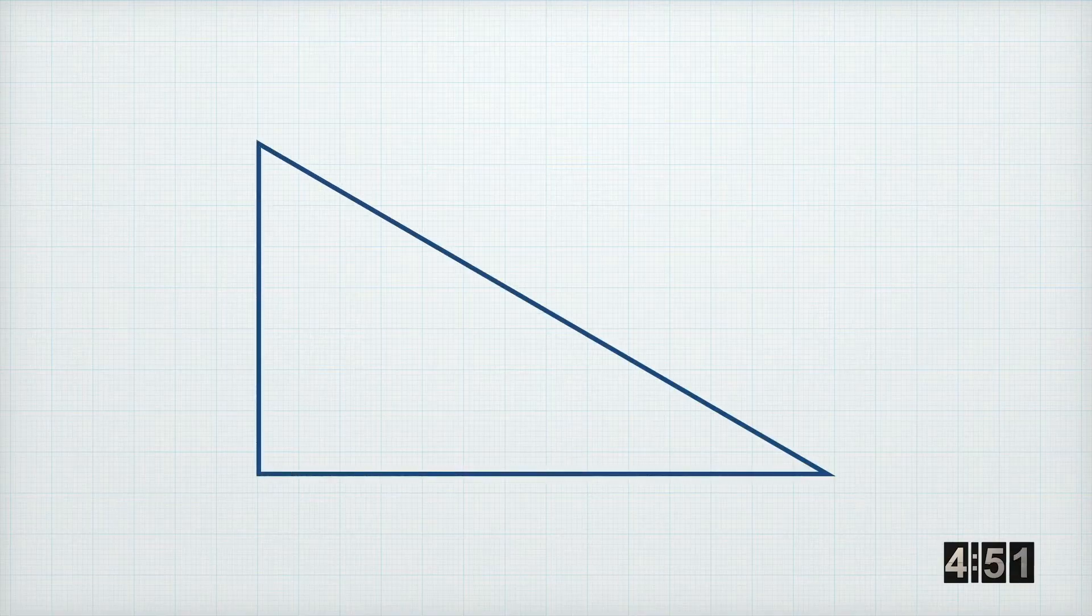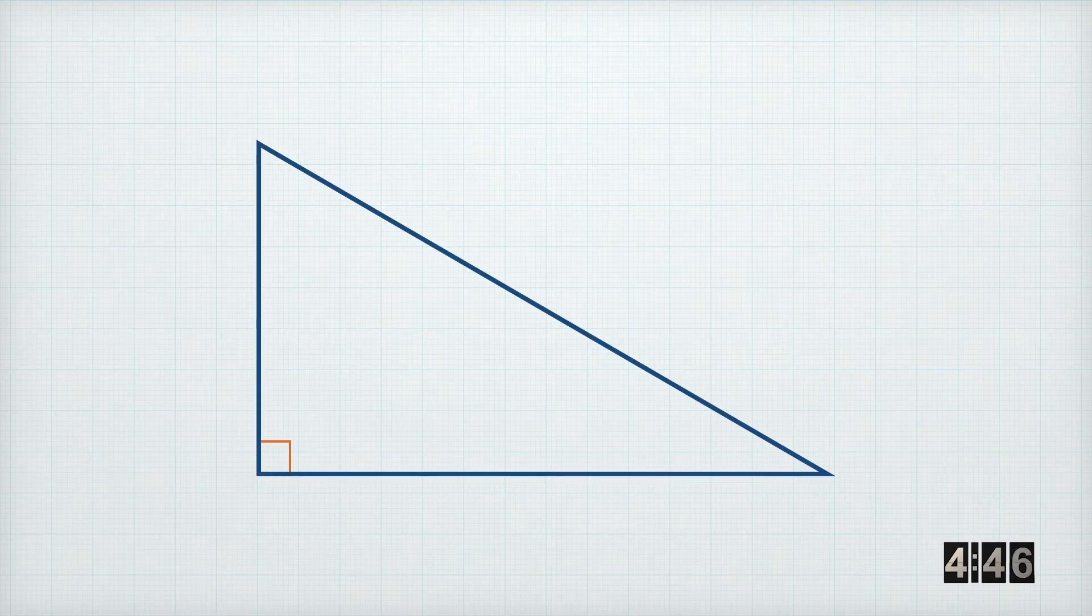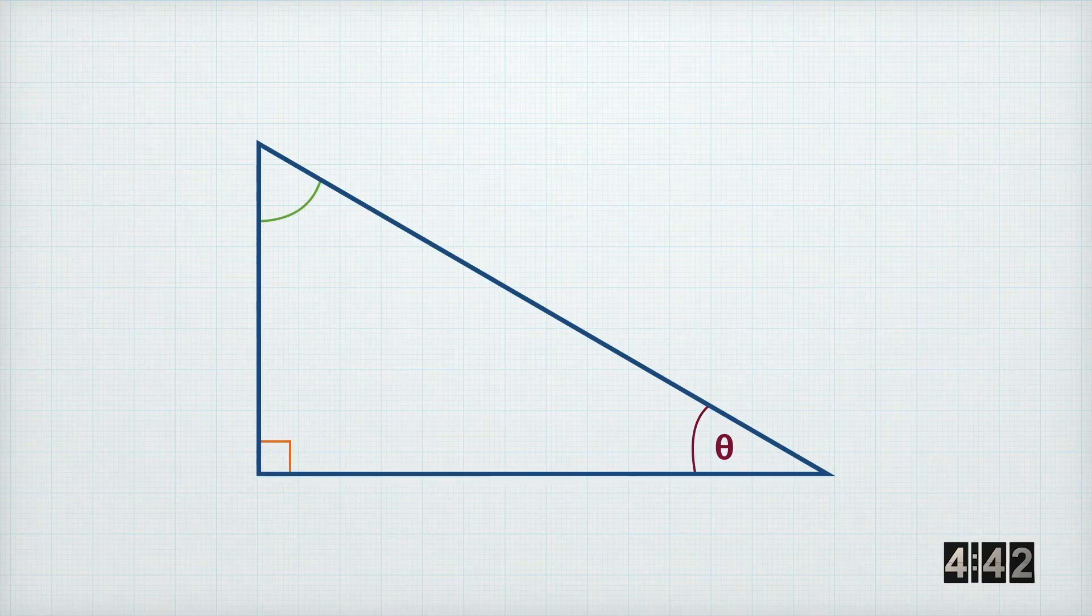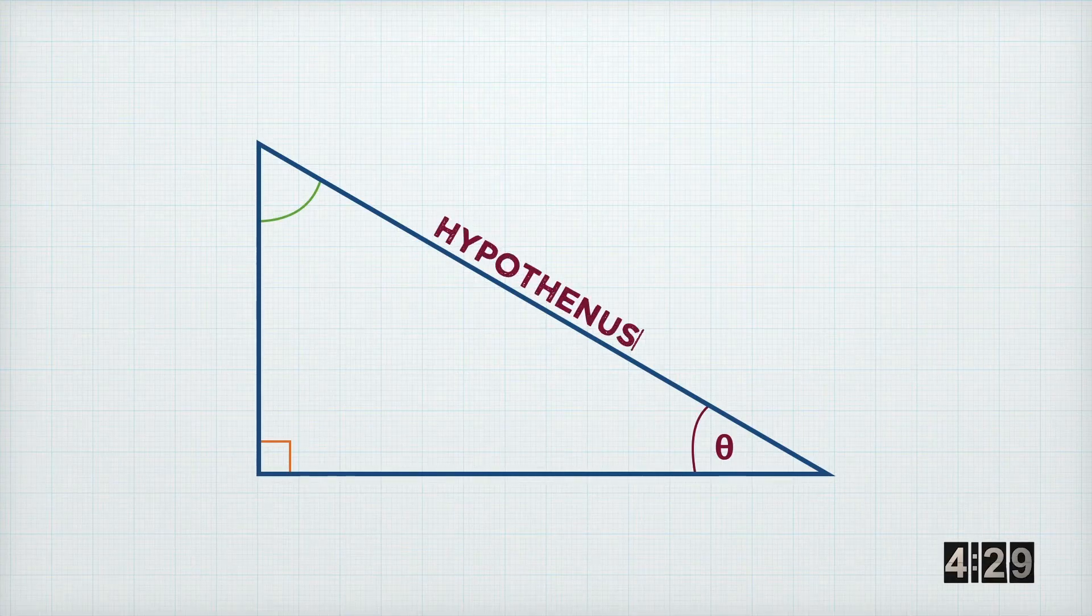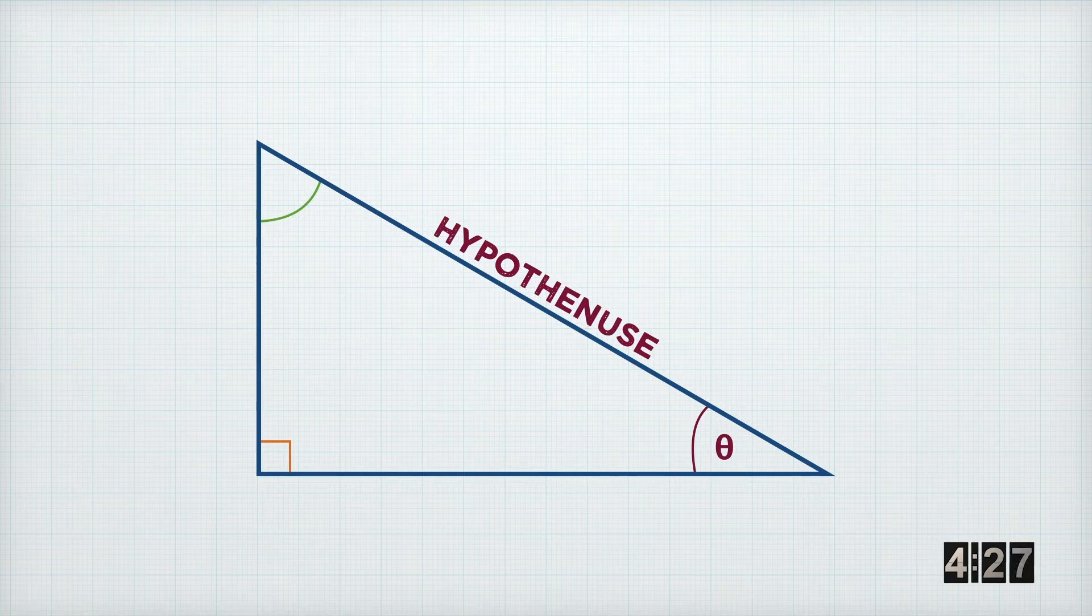Now, a right angle triangle is one in which one of the angles is a right angle. So let's have a look at this right angle triangle, and I'm going to pick on this angle just here, and I've labeled it theta because that's the label that we often give to angles that we're interested in. And once we've picked the angle that we want to find something out about, we need to label the sides. The longest side is always known as the hypotenuse.